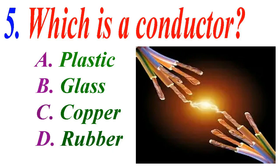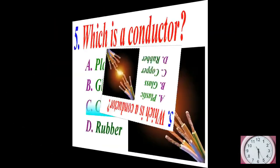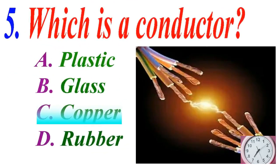Which is a conductor? A plastic, B glass, C copper, D rubber. The correct answer is C copper.